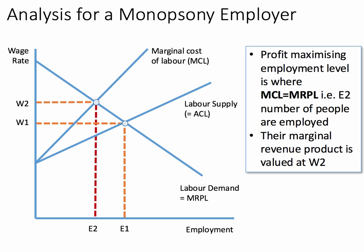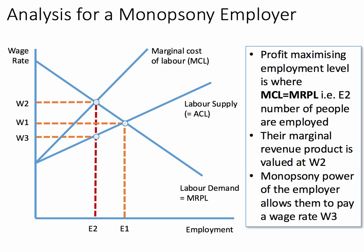Now, the key question becomes: what wage does the monopsonist have to offer to get E2 number of workers to work for them? Well, we don't use the marginal cost of labour curve to find this out — we use the labour supply curve, the average cost of labour. And we find that to employ E2 workers, the monopsonist power of the employer permits them to pay a wage rate W3.